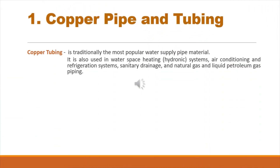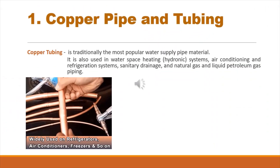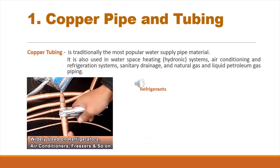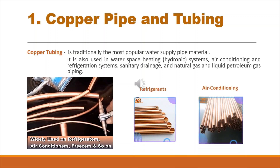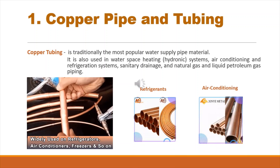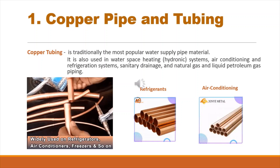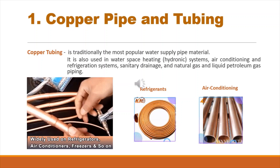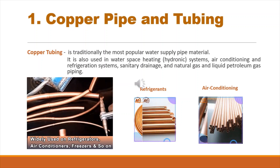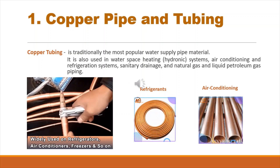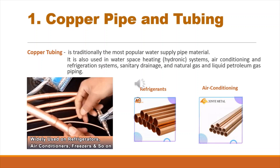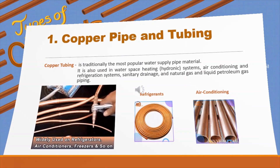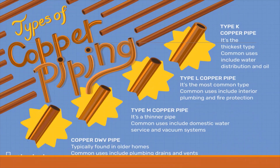Copper tubing is traditionally the most popular water supply pipe material. It is also used in water space heating systems, air conditioning and refrigeration systems, sanitary drainage, and natural gas and liquid petroleum gas piping.